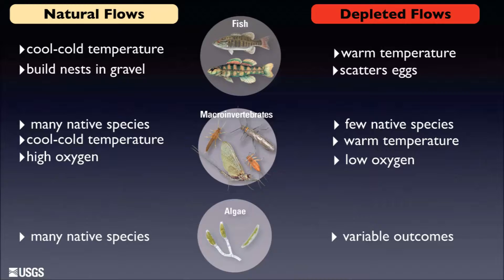Many fish species reproduce in a very narrow, specific season of the year, and oftentimes that reproductive period is synchronized with the natural flows so they know when flows are changing for their benefit. They lay their eggs in shallow gravel at the bottom of the stream, and for those eggs to survive, they need a relatively constant and predictable flow of water over them.